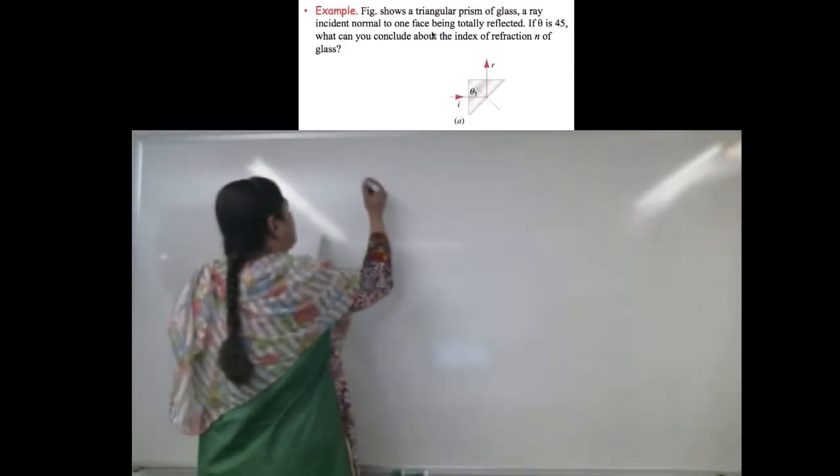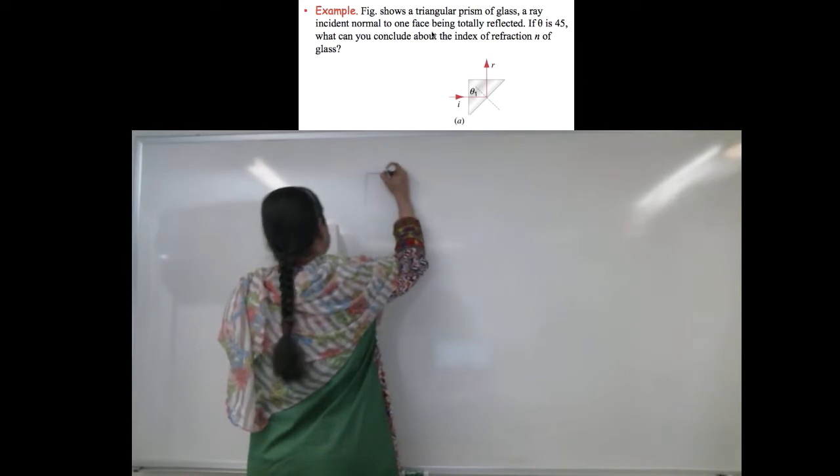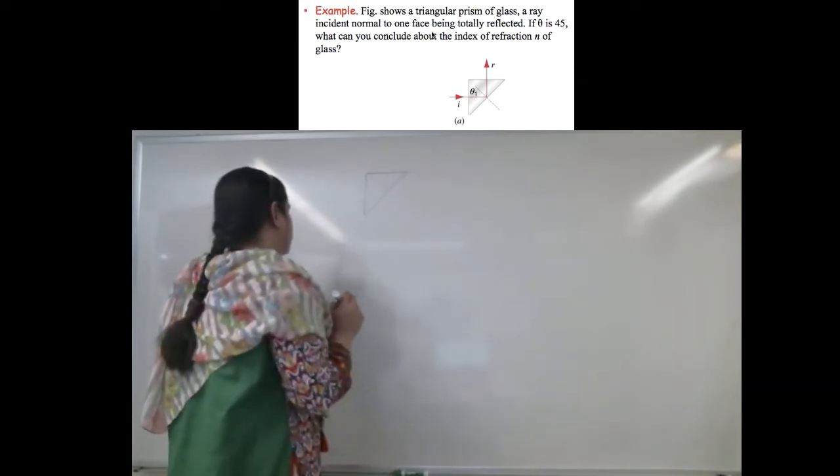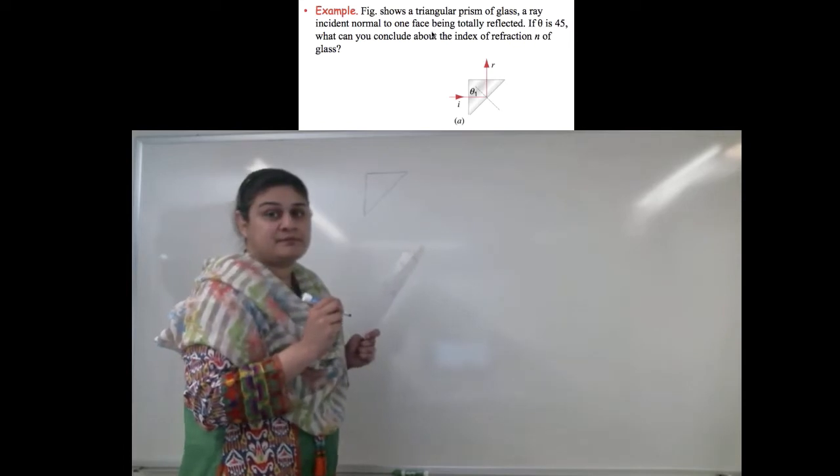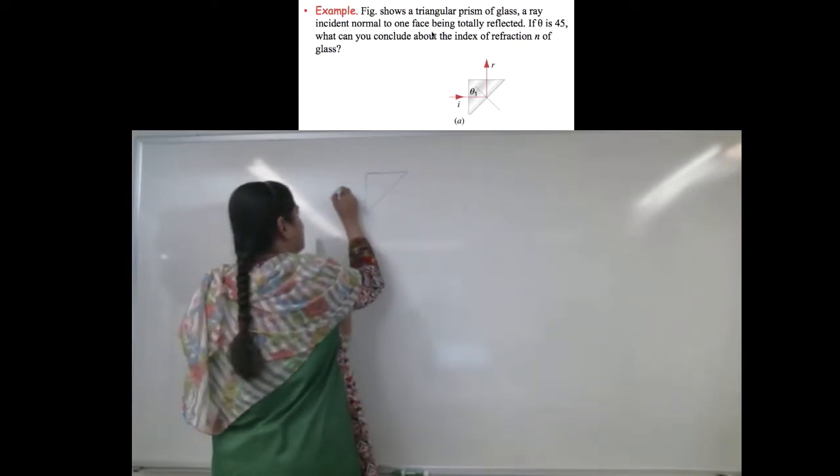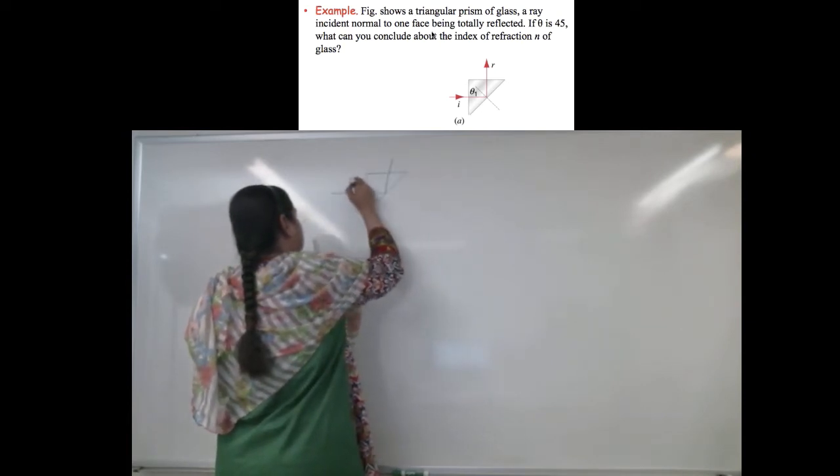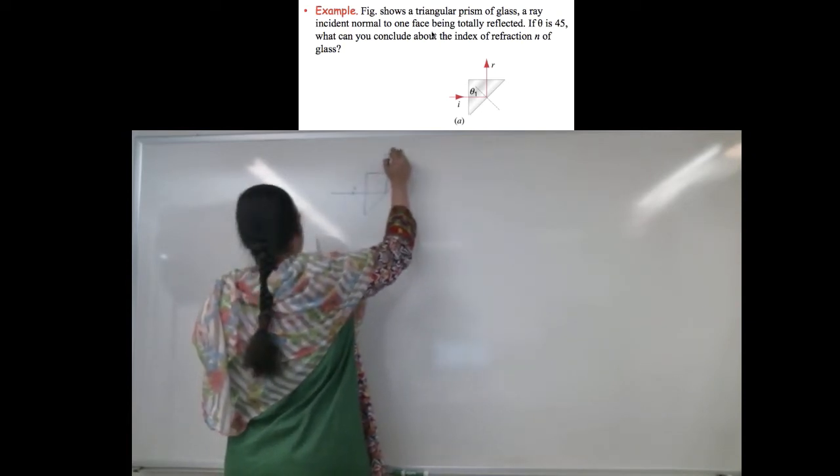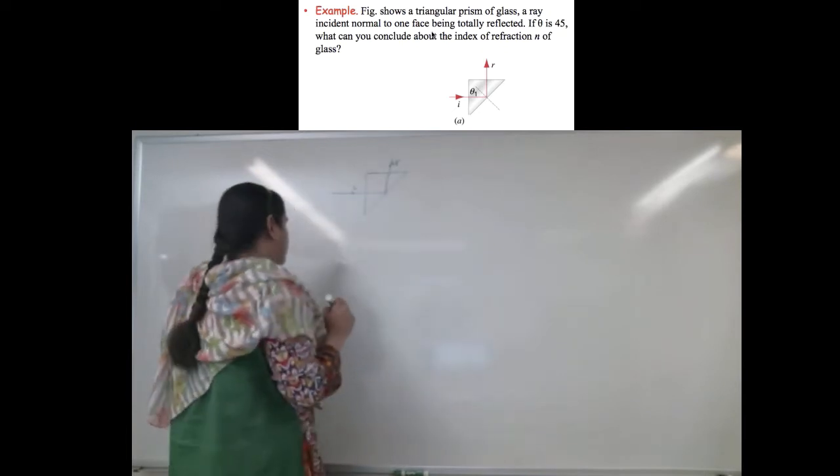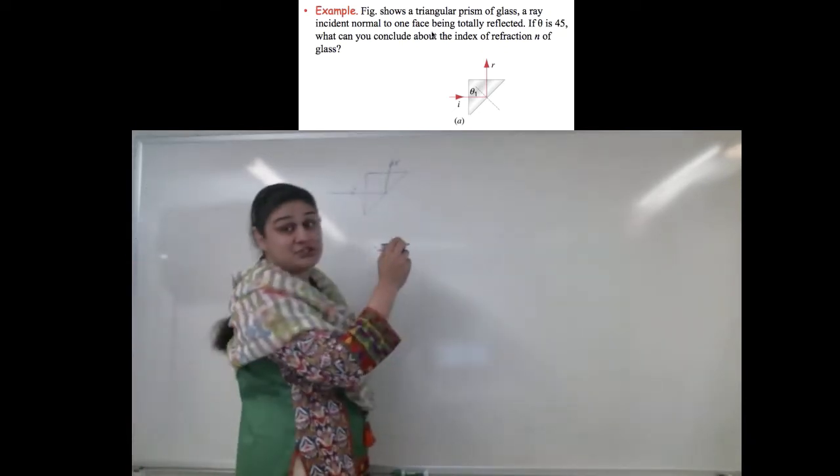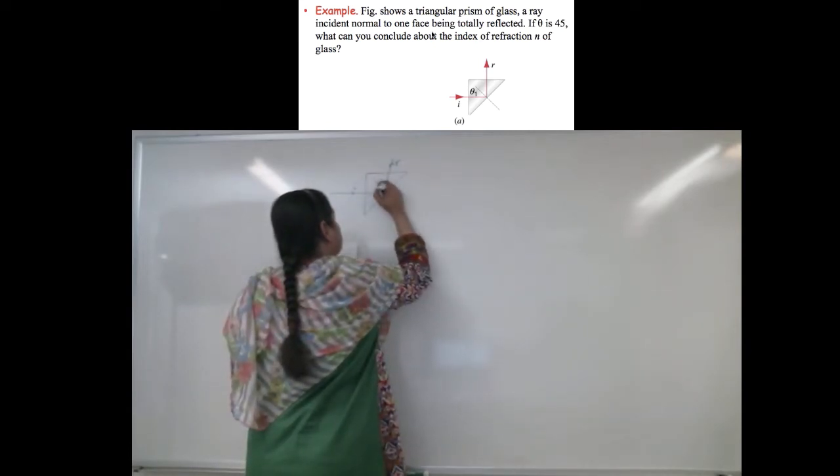The picture shows a prism like that, and it shows the angle it's coming in and the angle that it's going out. So, I equals R. What it says is theta 1, which it shows here, is 45 degrees.